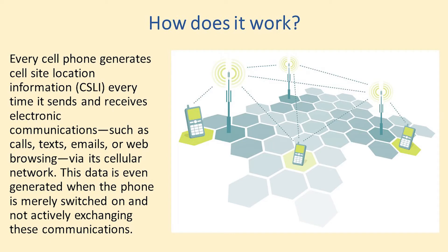Every time your cell phone does anything, that phone is connected to a cell phone tower or a satellite. All electronic communications — calls, texts, emails, web browsing — go through the cellular network. This includes times when you're not even actively on the phone; it's just on doing its thing. Right now my phone is just sitting there contacting cell phone towers, trying to figure out if I'm getting new emails or text messages. You don't have to actively be using your phone for this data to be sent up into the cloud.